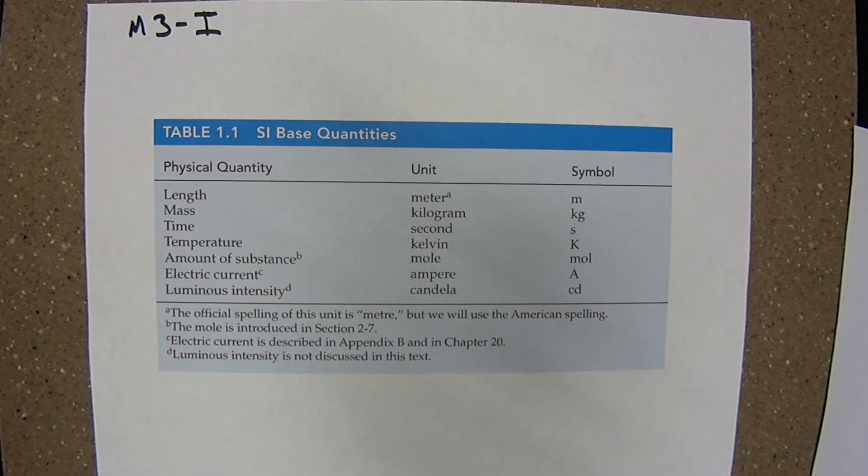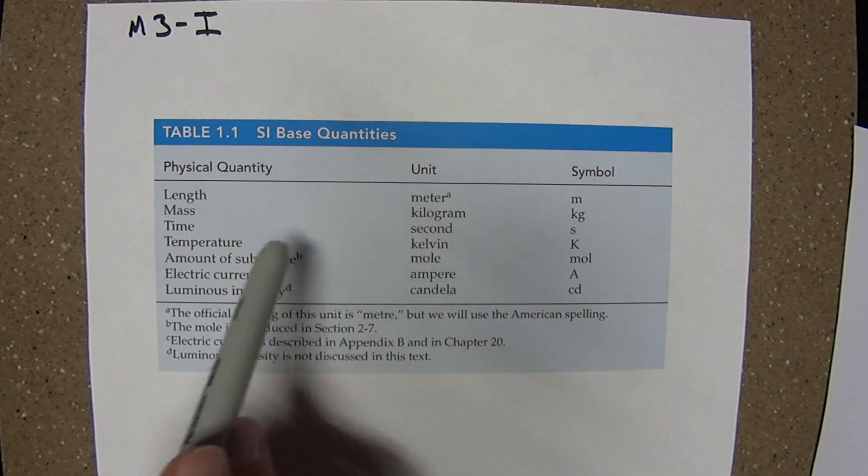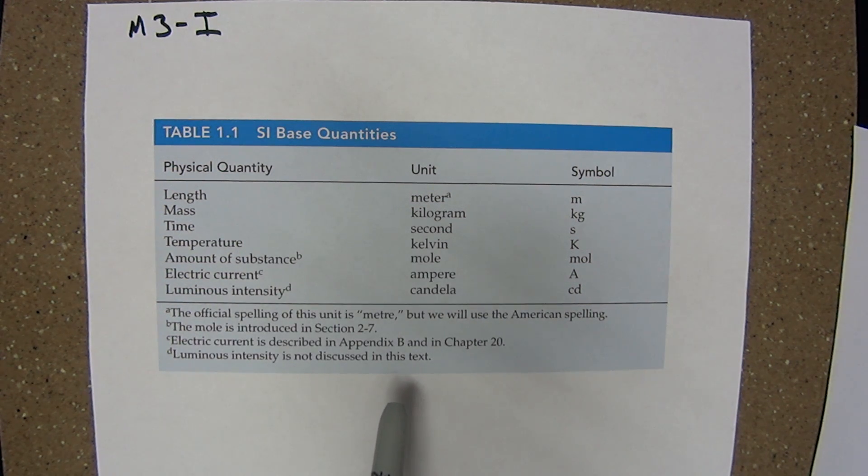Module 3 Introduction, International System of Units, Base Units. All measured and calculated values in the physical sciences can be expressed in one of these seven base units, or a combination of these units. In other words, these seven base units are all we need.